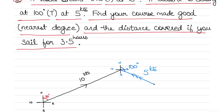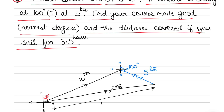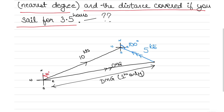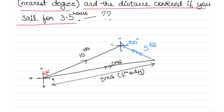I join the start point to the end point, and this line with double arrows denotes the course made good, because the current is acting on the vessel's course. The distance of this line is the distance made good for one hour. The course made good applies for the full three and a half hours, but the distance found from this one-hour triangle must be multiplied by three and a half hours.